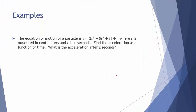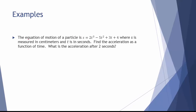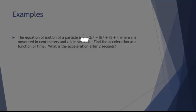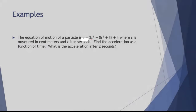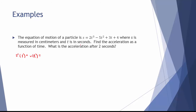Let's look at another example. The equation of motion of a particle is s equals 2t cubed minus 5t squared plus 3t plus 4, where s is in centimeters and t is in seconds. We need to find the acceleration as a function of time. Acceleration is the second derivative of the position function, and there's no way to reach the second derivative without first finding the first derivative — which, by the way, is the velocity function.